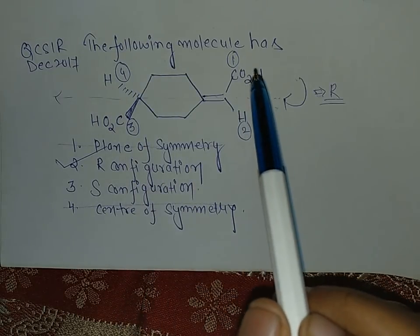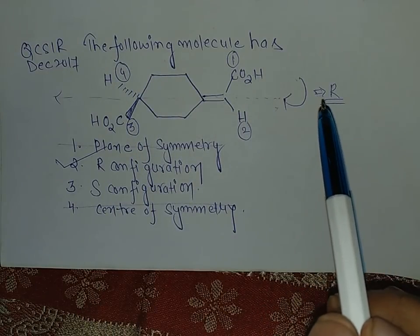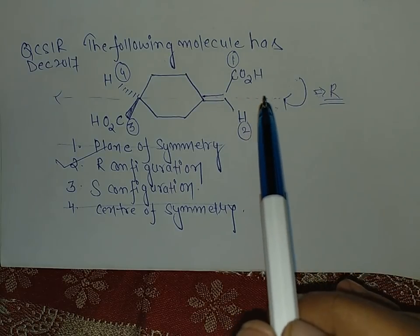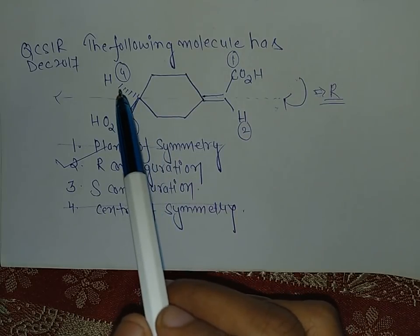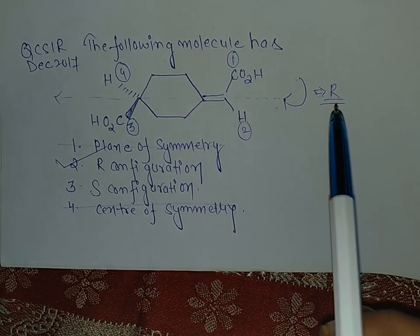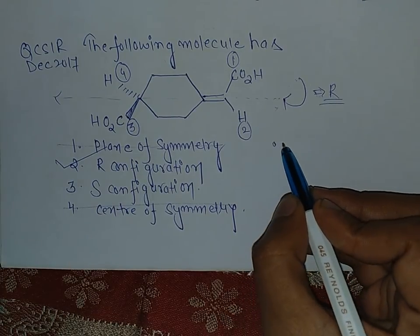So the priority is one, two, three, and four. This is a clockwise direction, so the stereochemistry is R. R is the configuration and fourth group is below the plane, that's why R is retained. So see you in the next video, thank you.